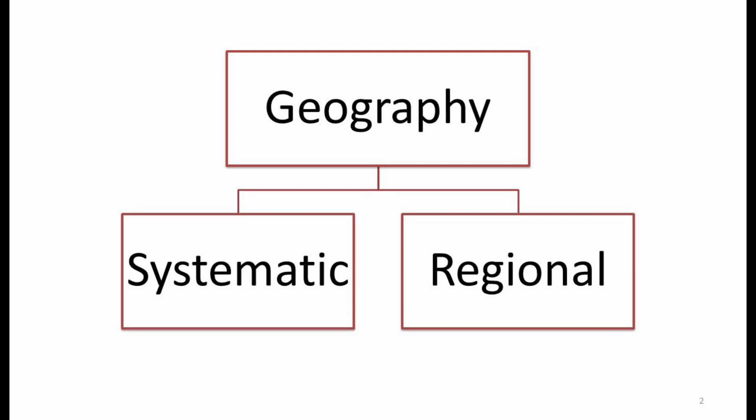Geography can be divided into two parts, or it can be studied under two approaches: the systematic approach and the regional approach. When we begin to study a subject, it becomes necessary to classify its subject matter, which makes it very easy to understand. Similarly, in geography there are several classifications given by various geographers and thinkers, but the most accepted classification is systematic geography and regional geography.